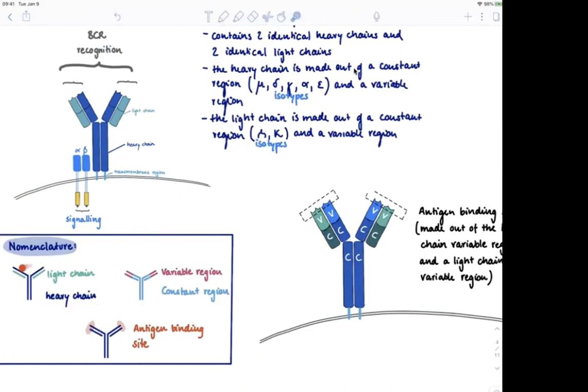And before we get to the next point, here you can just see in this nomenclature box what we just discussed. So we can think about an antibody consisting of a heavy chain and a light chain, but we can also further split up the heavy chain into the constant and variable regions. Same for the light chain.